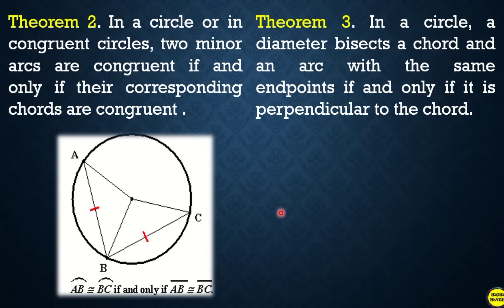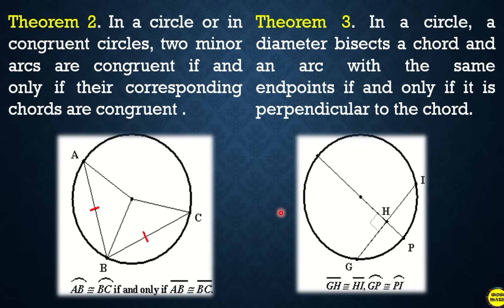For theorem number three: in a circle, a diameter bisects a chord and an arc with the same endpoints if and only if it is perpendicular to the chord. For example, in this illustration, GH will be equal to HI since GI is perpendicular to HP, so the measure of one segment equals the measure of the other.